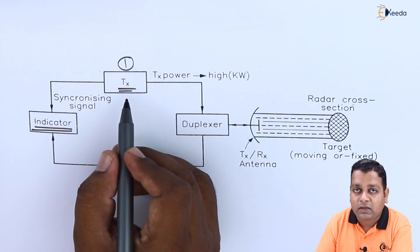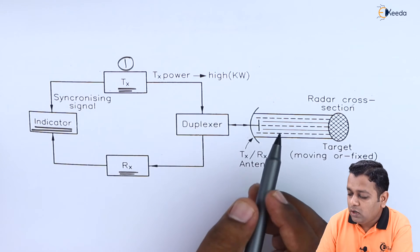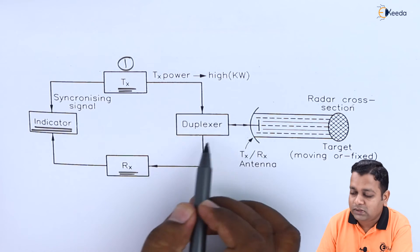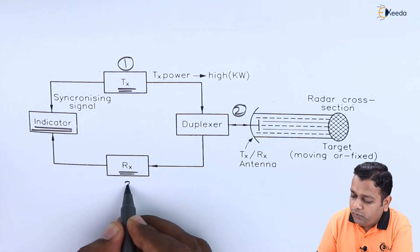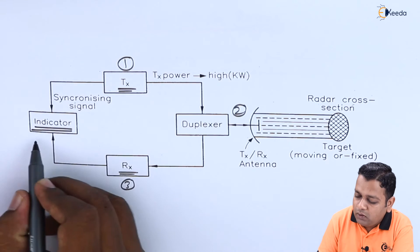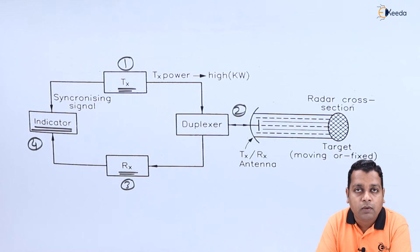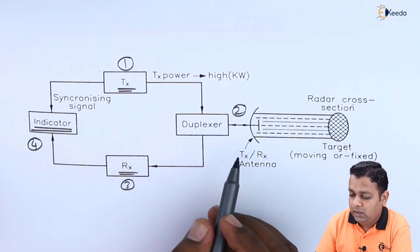Earlier what we had represented the transmitter section to be an important block, next to that it was the transmitting antenna. Now we have only one antenna. Using the duplexer system, this is the second component. The third component will be the receiver and fourth component indicator or radar display. The number of components have been reduced from 5 to 4 by using the duplexer technique.